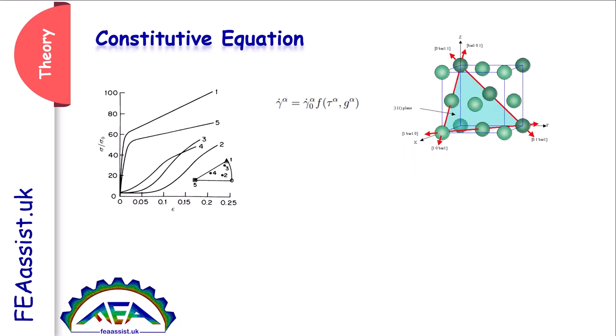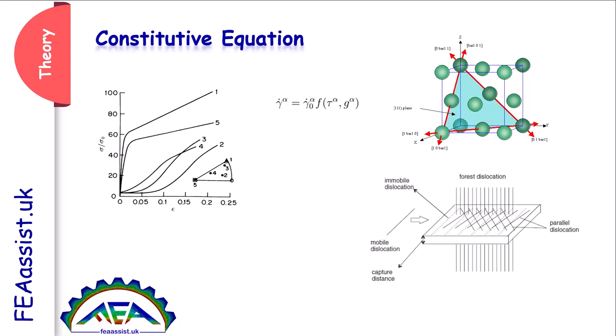In each slip system there is a relation between the amount of movement of planes and the stress and strength in these planes. One of the sources of strength in this equation — we call it g-alpha — is dislocations. The interaction of dislocations with other dislocations, or other obstacles like grain boundaries, can produce some resistance to the movement of the planes.